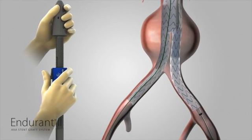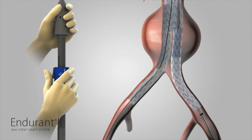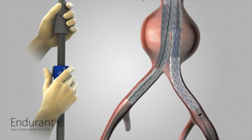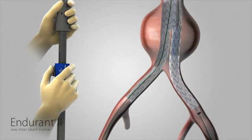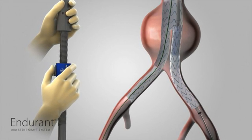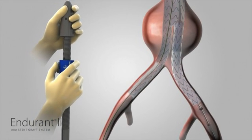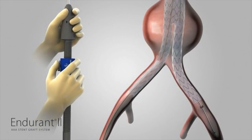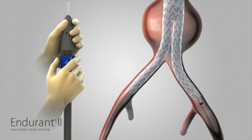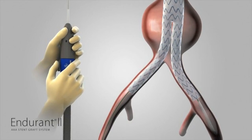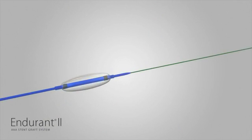To configure for removal, continue to hold the delivery system with one hand on the front grip and the other hand on the slider. Pull back the slider trigger and hold the slider stationary while bringing the front grip to the slider. Gently remove the delivery system using fluoroscopy to ensure that the stent graft does not move during withdrawal.